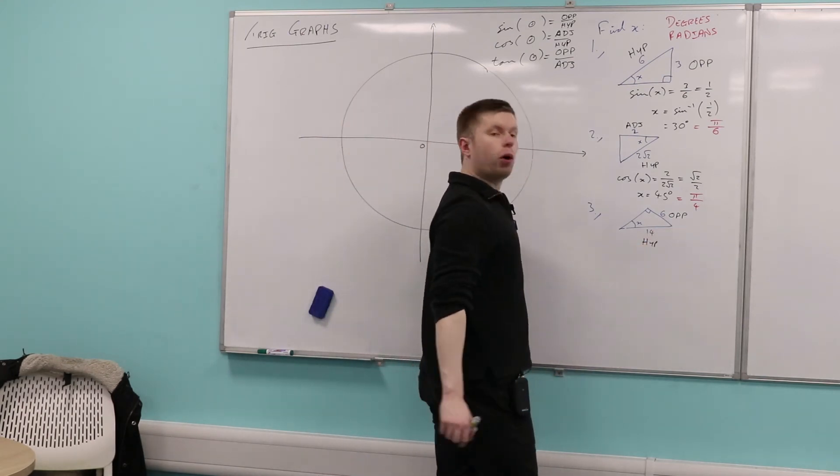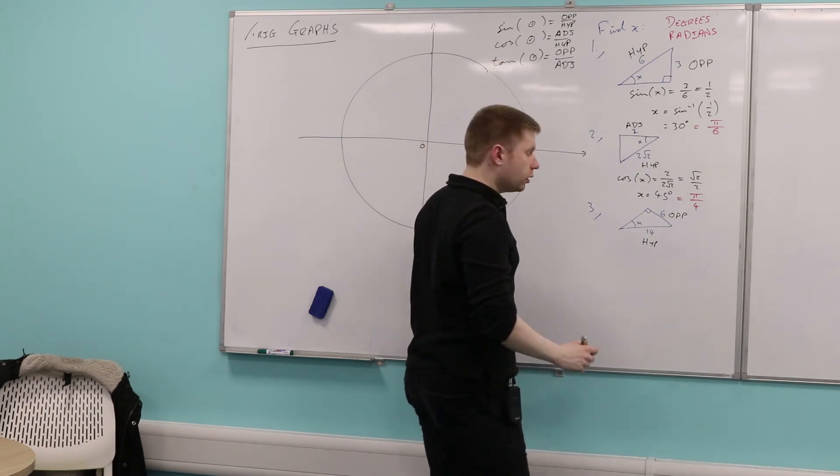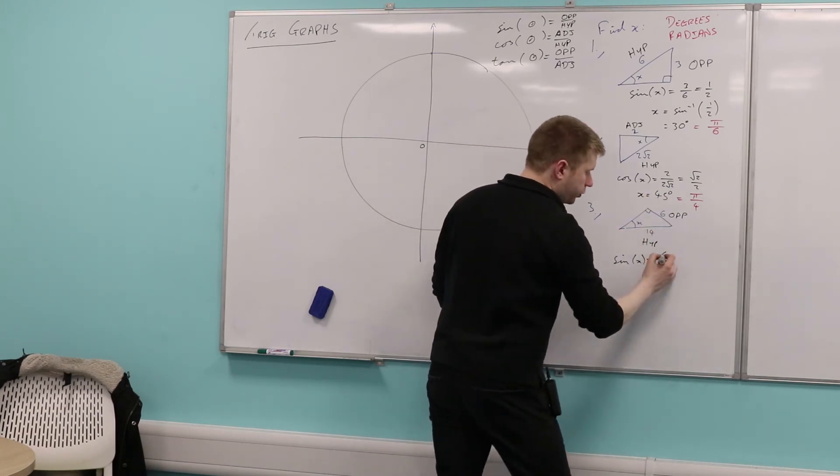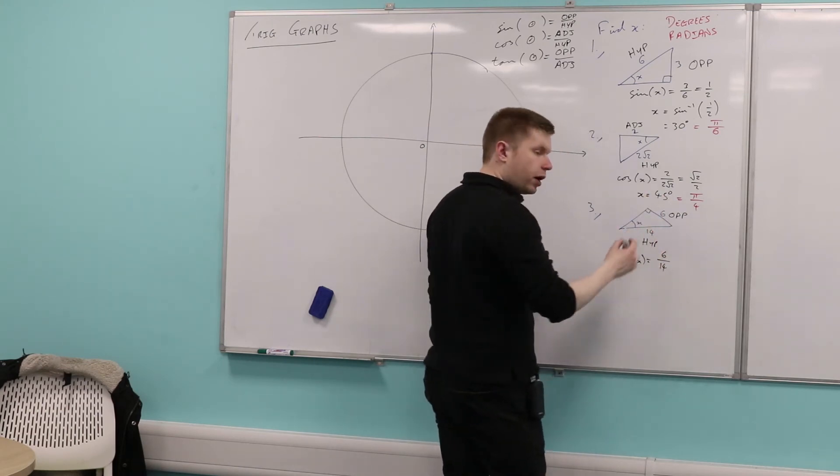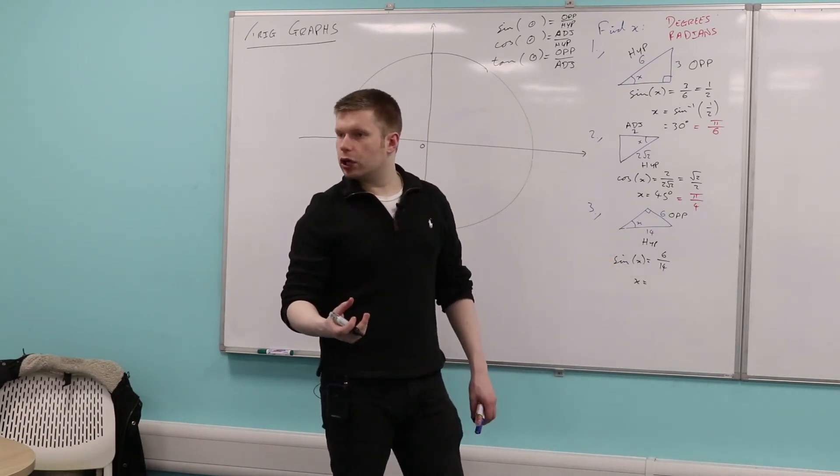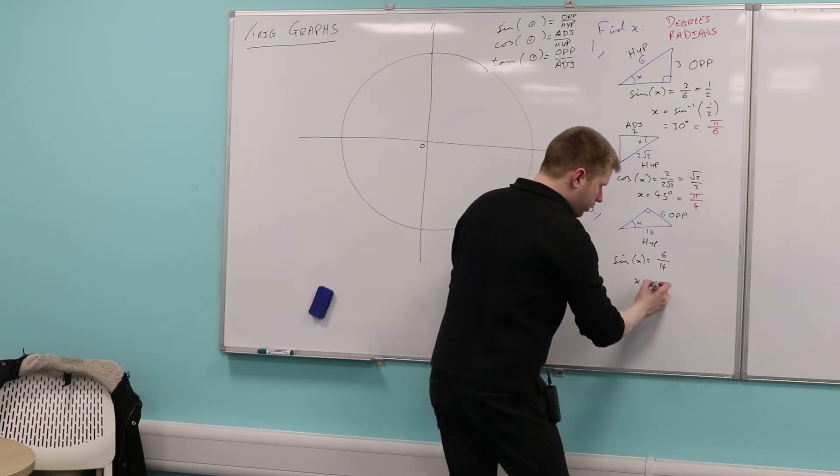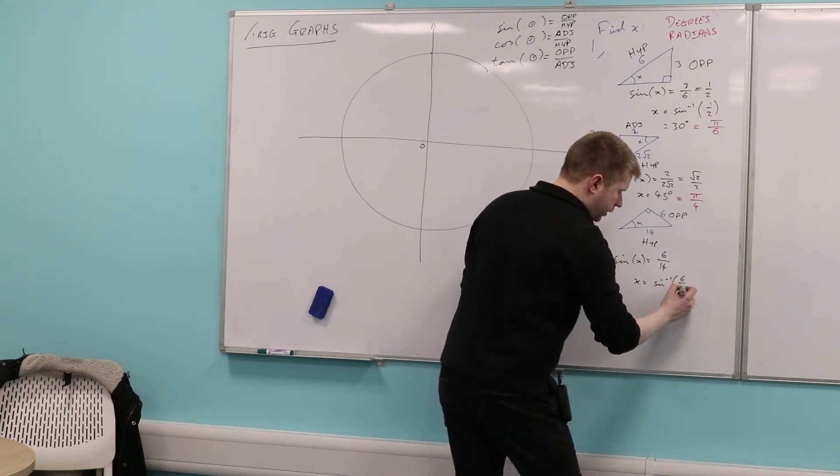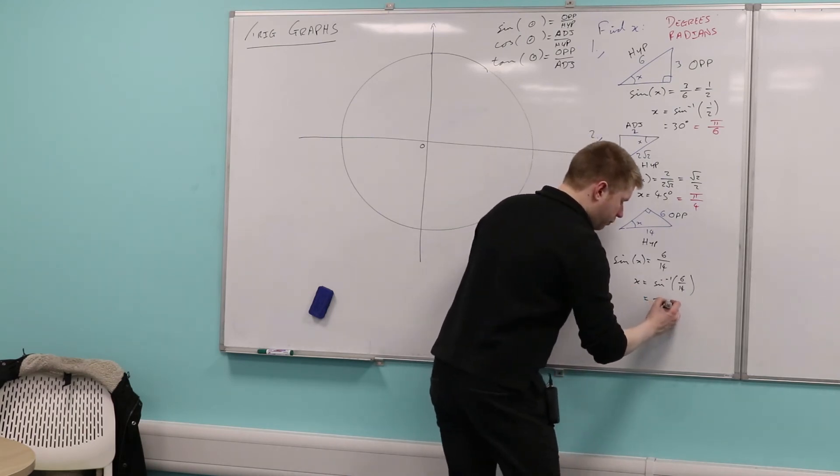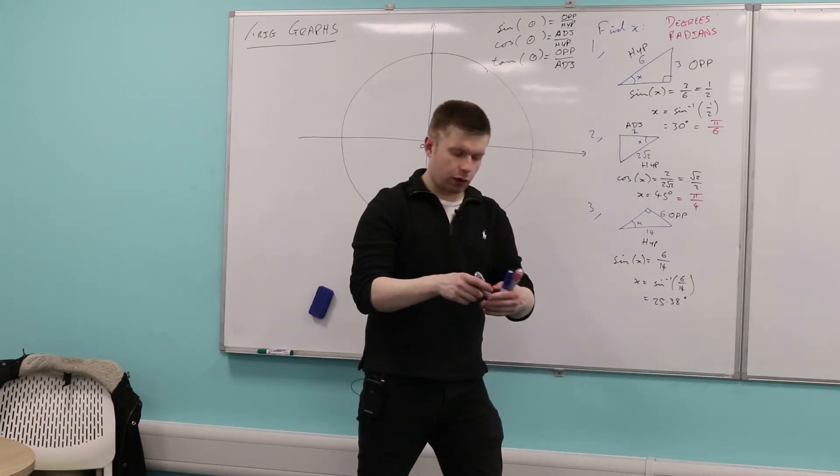So, okay, we're comparing opposite and hypotenuse. In which case, which of these three ratios are we going to be using? Sine. Perfect. So sine of x is going to be equal to opposite over hypotenuse, so 6 over 14, or 3 over 7. Now, in this case, it's not a nice ratio. It's not a nice angle. So therefore, we're going to say x equals the sine inverse of 6 over 14. What does this come out as? 25.38. 25.38 degrees. How would we convert that into radians?